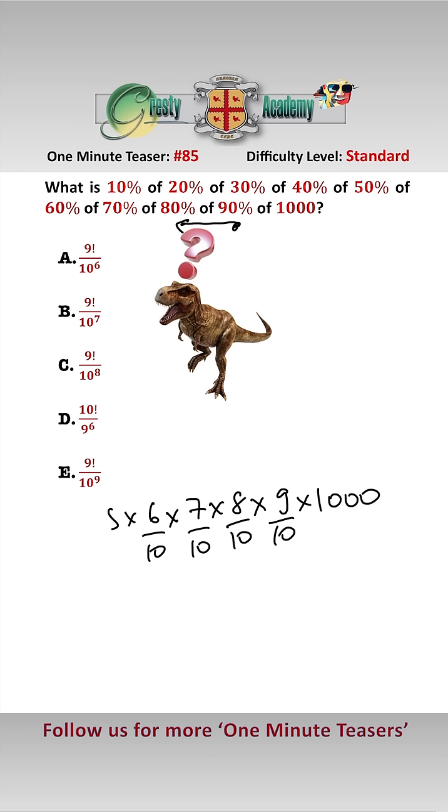And 60% of that is the same as six-tenths, and 50% of that is the same as five-tenths. Let's move up here. And 40% of that is the same as four-tenths, and 30% of that is the same as three-tenths, and 20% of that is the same as two-tenths, and 10% of that is the same as one-tenth.